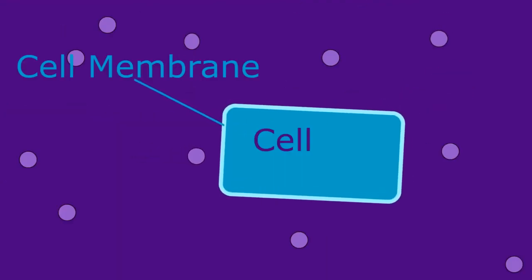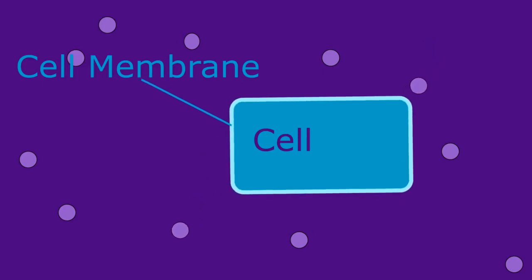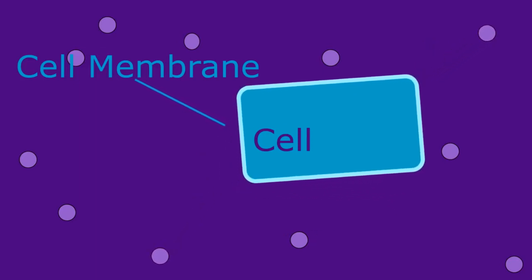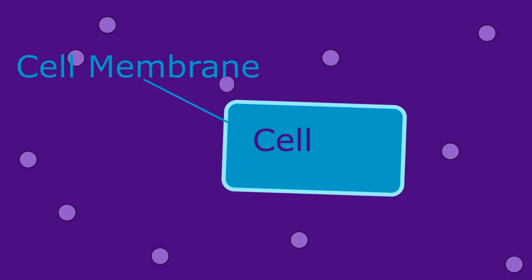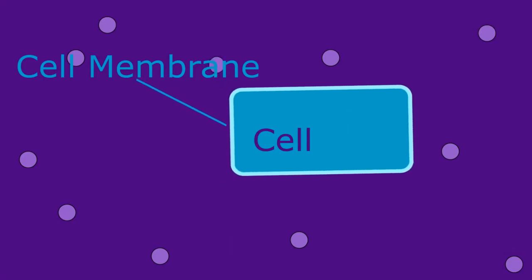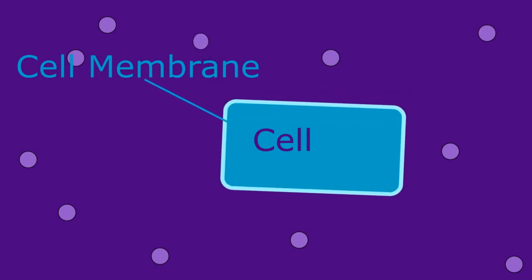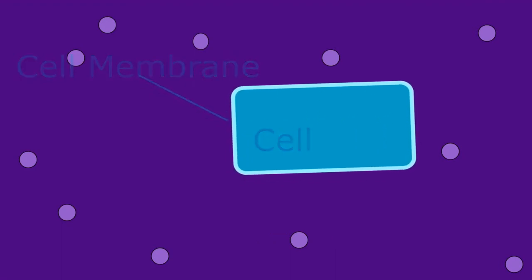The membrane's main job is to protect the cell from its surroundings. It separates the cell's interior from the outside environment and helps it keep its shape. The membrane is selectively permeable, which means it allows certain organic molecules to pass into and out of the interior.